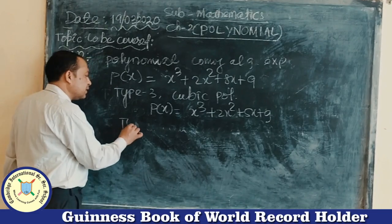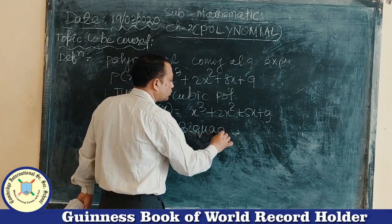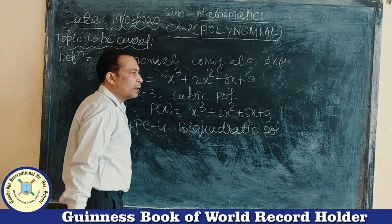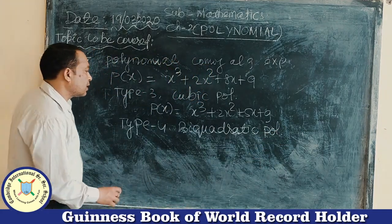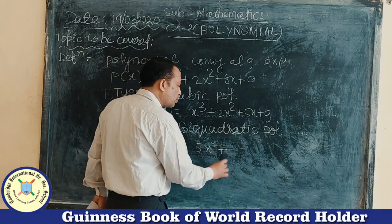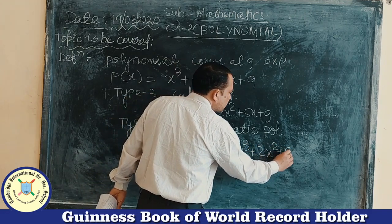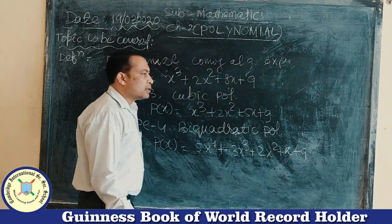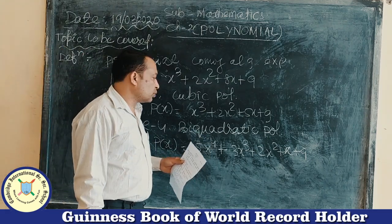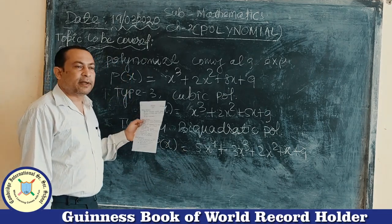Next, Type 4: Biquadratic Polynomial. The polynomial whose degree is 4 is called a biquadratic polynomial. For example: 5x⁴ + x³ + 2x² + x + 9. When this polynomial is solved, we get 4 zeros. So these are the different types of polynomials.